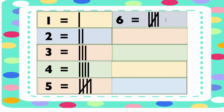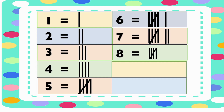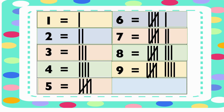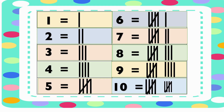Number six is represented by one group of five and one straight line. Number seven is represented by one group of five and two straight lines. Number eight is represented by one group of five and three straight lines. Number nine is represented by one group of five and four straight lines. Number ten is represented by two groups of five.